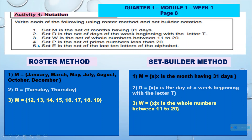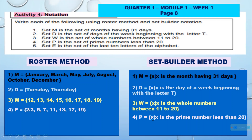Number 4: In verbal describing method, we have Set P is the set of prime numbers less than 20. In roster or listing method, we have: Set P = {2, 3, 5, 7, 11, 13, 17}. Don't forget to write a comma to separate the elements. In set builder method, we have: Set P = {X such that X is a prime number less than 20}.